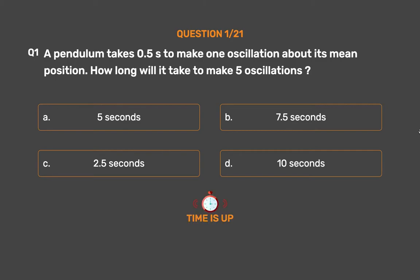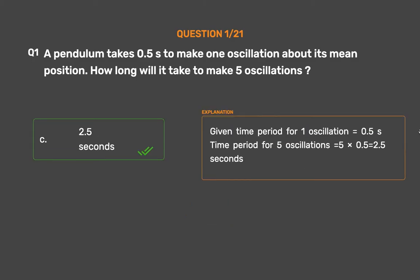The correct answer is Option C: 2.5 seconds. Given time period for 1 oscillation equals 0.5s, time period for 5 oscillations equals 5 times 0.5 equals 2.5 seconds.